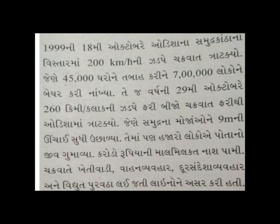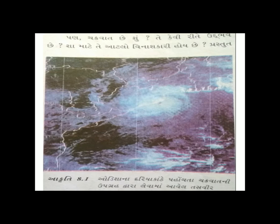ચક્રવાતે પિસ્તાળીસ હજાર ઘરોને તબાહ કરી અને સાત લાખ લોકોને બેઘર કરી નાખ્યા. કરોડ રૂપિયાની માલ-મિલ્કત, ખેતીવાડી, વાહનવ્યવહાર, દૂરસંચાર અને વીજળી પૂરવઠાની લાઇનોને ભારે અસર થઈ. 9 મીટરની ઊંચાઈએ ઉછળેલા મોજાઓથી હજારો ઘર તબાહ થઈ ગયા.